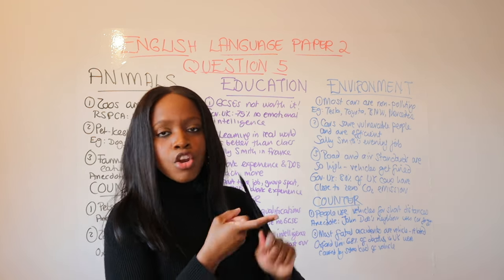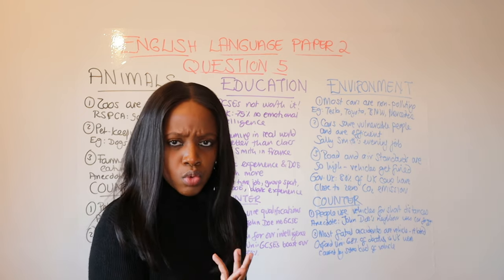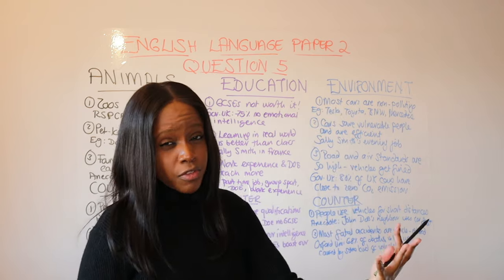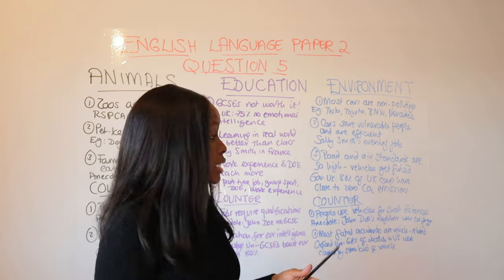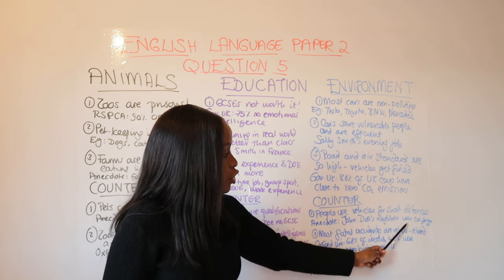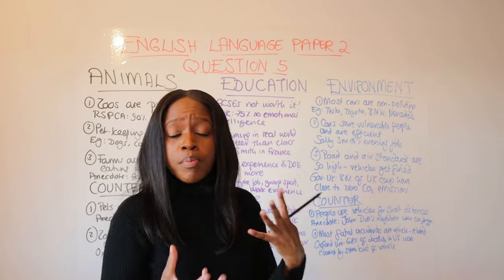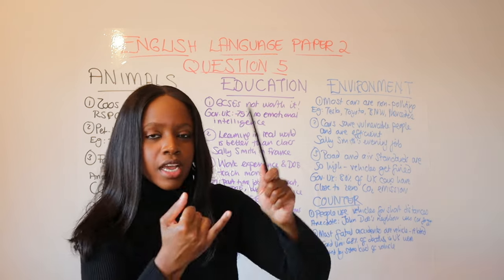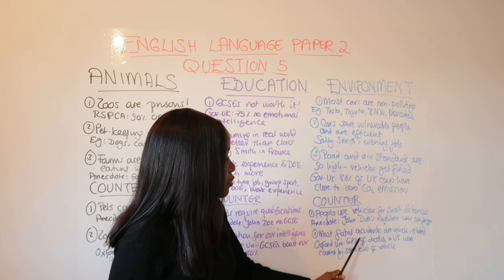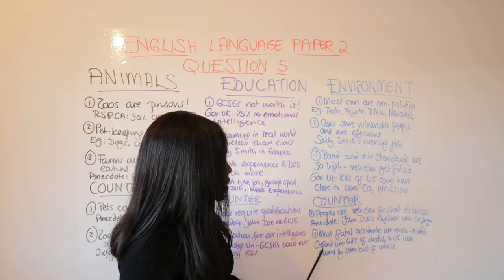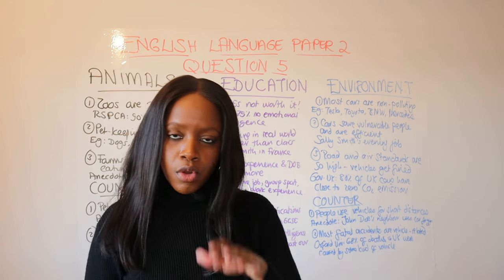For the counterarguments against cars and planes: first, people continue to use vehicles for very short distances needlessly. For example, John Doe's neighbour drives five minutes to the gym rather than walking, contributing to sound pollution. Second, most fatal accidents are vehicle or plane related — made-up statistic: Oxford University found that 68% of deaths in the UK were caused by some kind of vehicle.